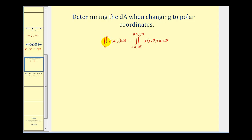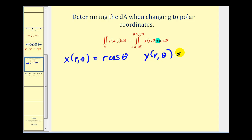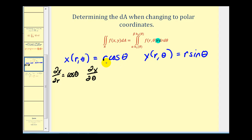Now let's look at an example where we convert a rectangular double integral to polar form. When we calculate the Jacobian, we should get the extra factor of r in our integrand. In this case, x of r, theta equals r cosine theta, and y of r, theta equals r sine theta. We want to verify that the Jacobian equals r. Our partial derivatives are: partial of x with respect to r is cosine theta; partial of x with respect to theta is negative r sine theta; partial of y with respect to r is sine theta; and partial of y with respect to theta is r cosine theta.